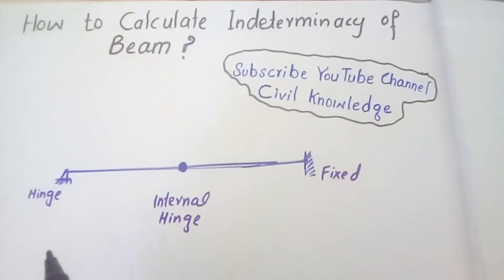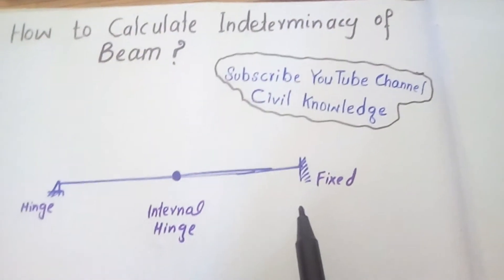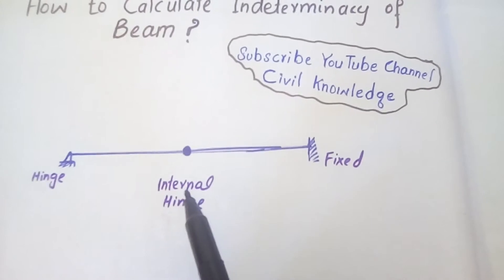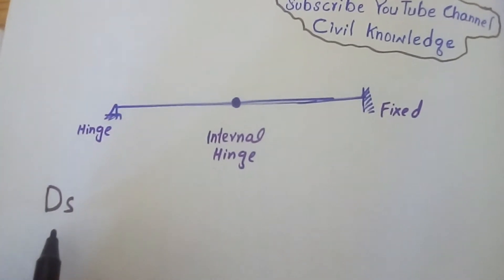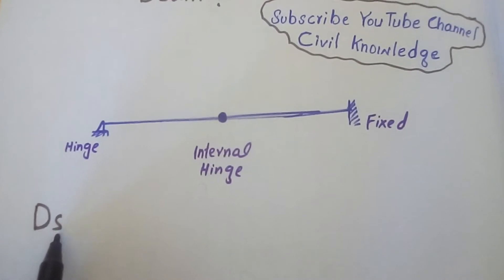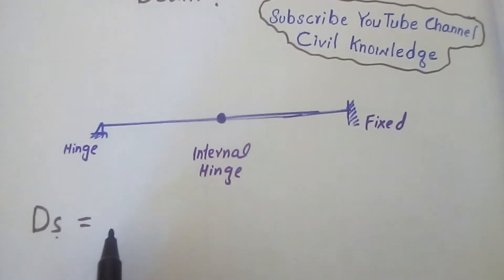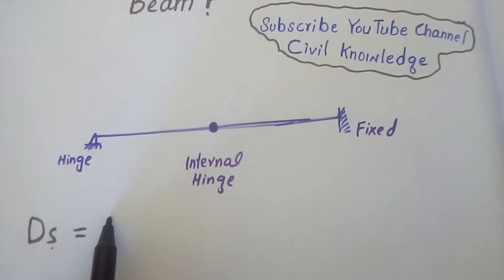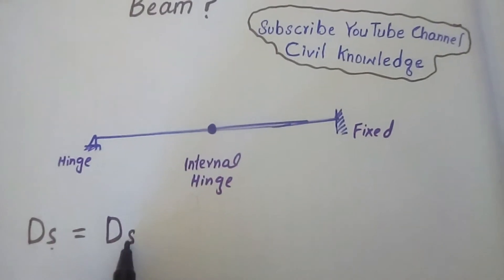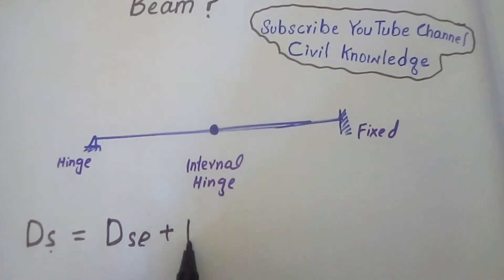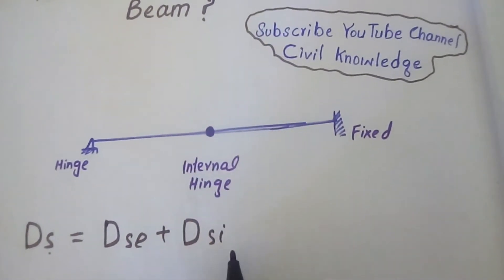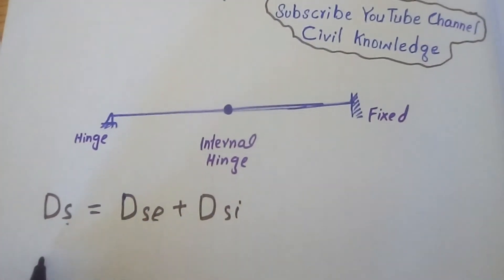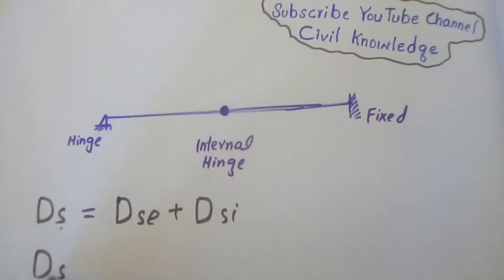Now we will solve this beam for its indeterminacy. First, we will find the static indeterminacy, represented as DS. As we know, static indeterminacy equals external static indeterminacy plus internal static indeterminacy — SI(external) + SI(internal). So now we will find out the external static indeterminacy.